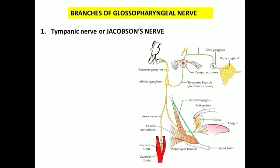The tympanic plexus provides several branches that supply sensory branches to the middle ear cavity and to the lateral part of the auditory tube or Eustachian tube. Another branch goes to the mastoid antrum. From this tympanic plexus arises the lesser petrosal nerve, which carries the preganglionic secretomotor fibers to the parotid gland. These preganglionic secretomotor fibers reach the otic ganglion, relay there, and further through the auriculotemporal nerve reach the parotid gland as secretomotor fibers.